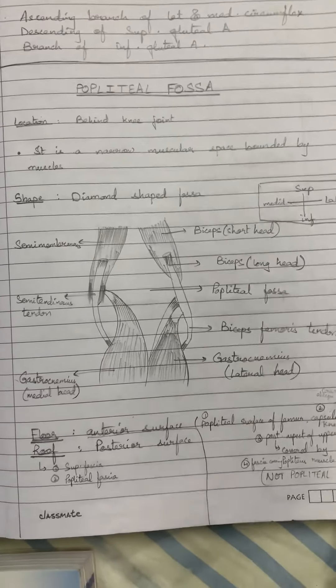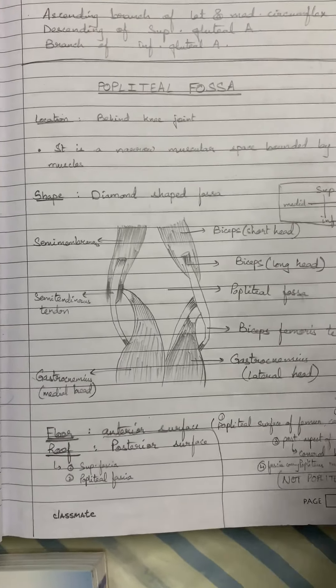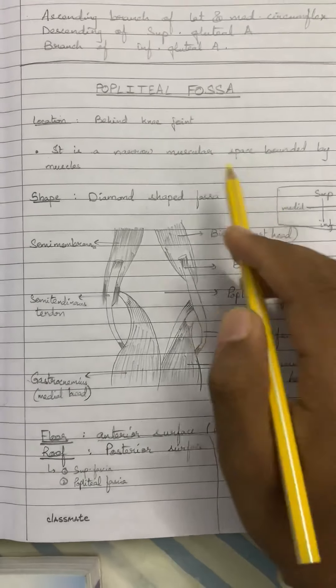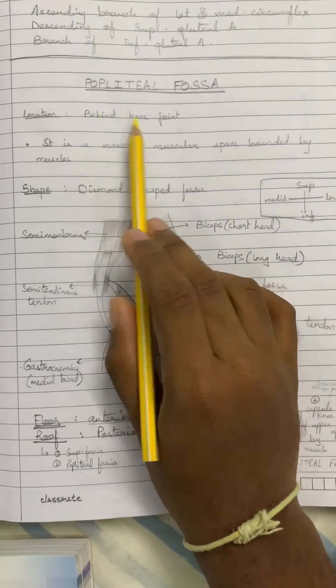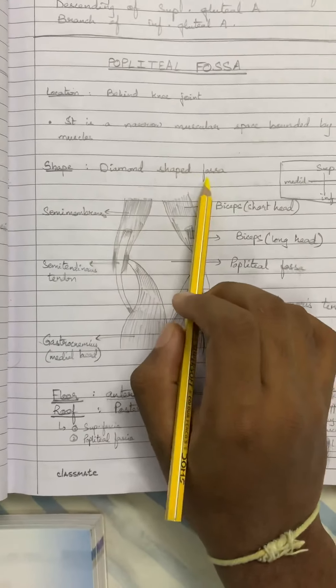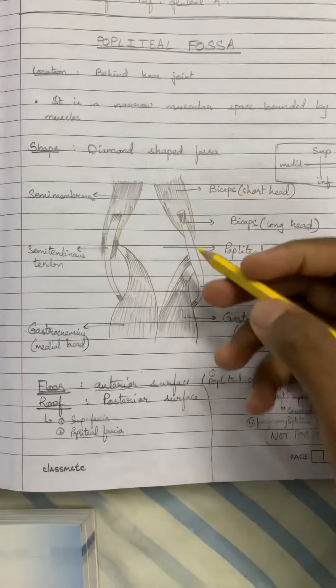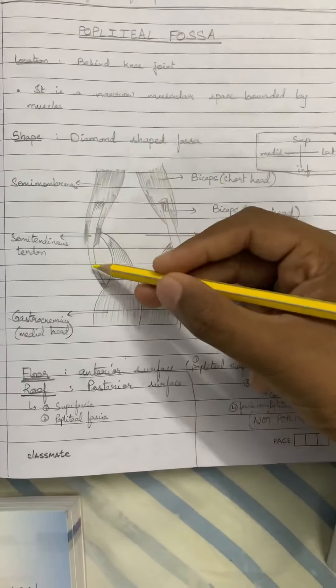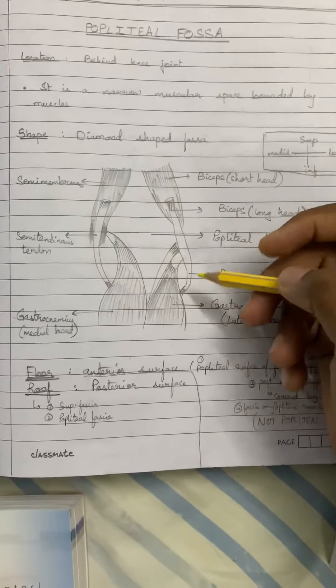Let's get started with the popliteal fossa. The location is behind the knee joint. It is a diamond-shaped fossa, and now let us talk about the boundaries.